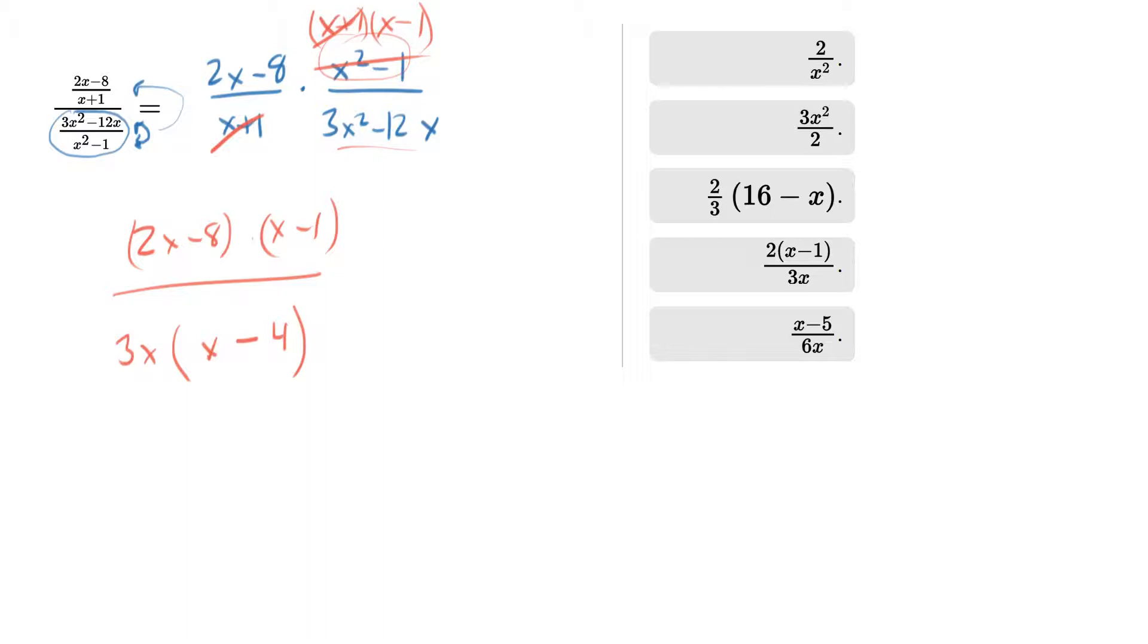Now I see another opportunity, which is up in the numerator. 2x minus 8, if we pull a 2 out, this actually becomes 2 times x minus 4, which means we can cancel those. Which means we have 2 times x minus 1 in the numerator over 3x in the denominator, and that certainly looks like something that might be an answer choice, and it is. That is the fourth answer choice.